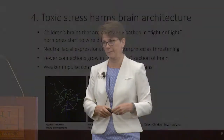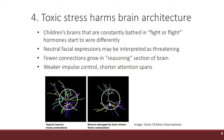So why do we care about toxic stress? It literally changes the brain's architecture. You see these two pictures. The picture on the left is a neuron of a typically developing three-year-old child — all sorts of chaos and confusion, a wonderful map of spaghetti. That's exactly what we want to see in a normally developing brain, with lots of overlapping connections going on inside that neuron.